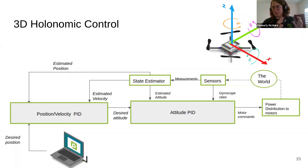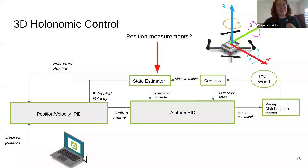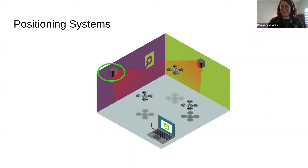The onboard CrazyFlie PD controller handles position control, but the big challenge is that it's very difficult to get position just from the internal IMU alone. You need something additional for the state estimator to be able to determine position. That brings us to the second part of the talk: positioning systems. The state estimator needs measurements in order to infer the drone's position, so this is a very important part of making a drone fly.